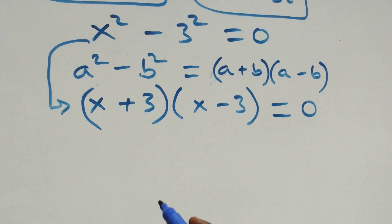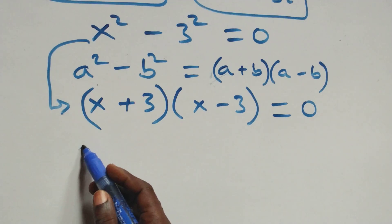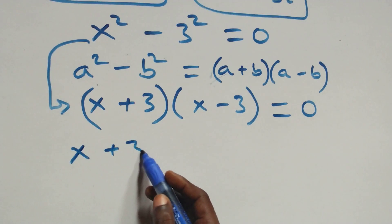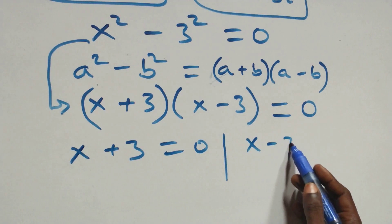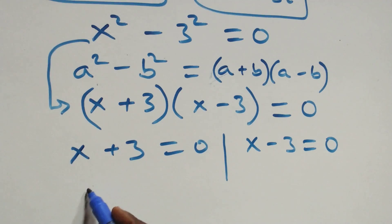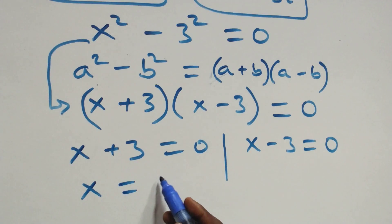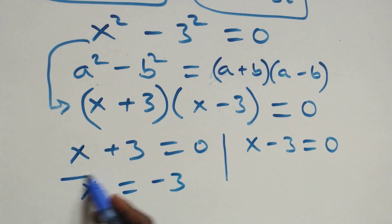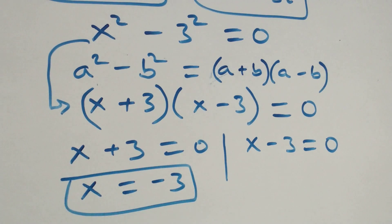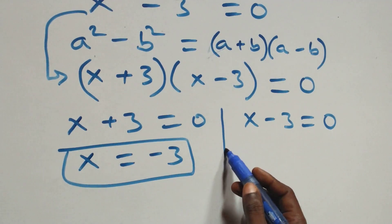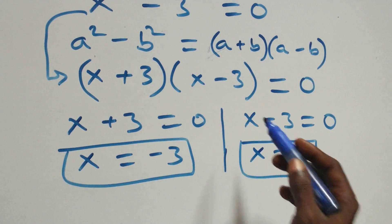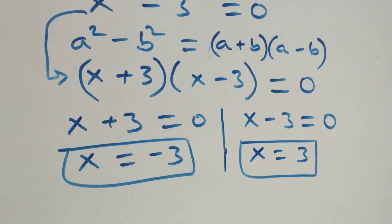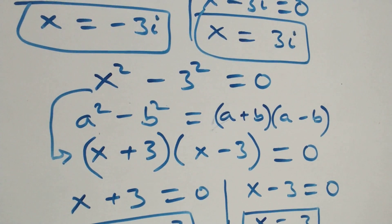This gives two possible cases. The first: x plus three equals zero, or x minus three equals zero. Solving, we get x equals −3, which is a real solution, and x equals 3, which is also a real solution. So we have two real solutions here.